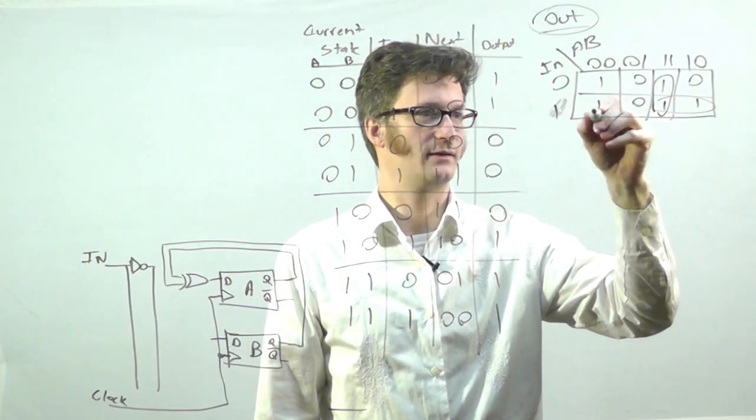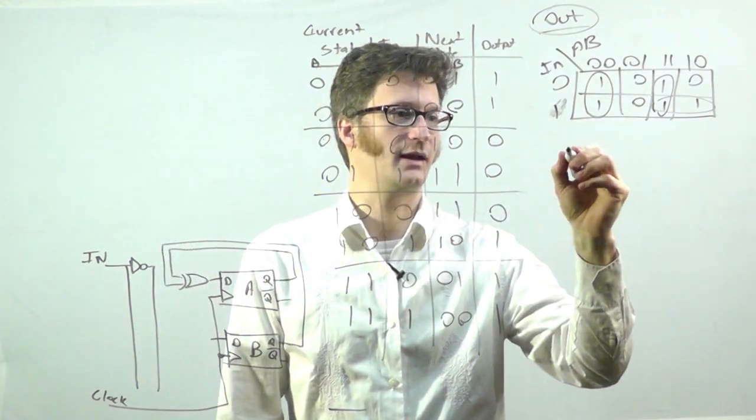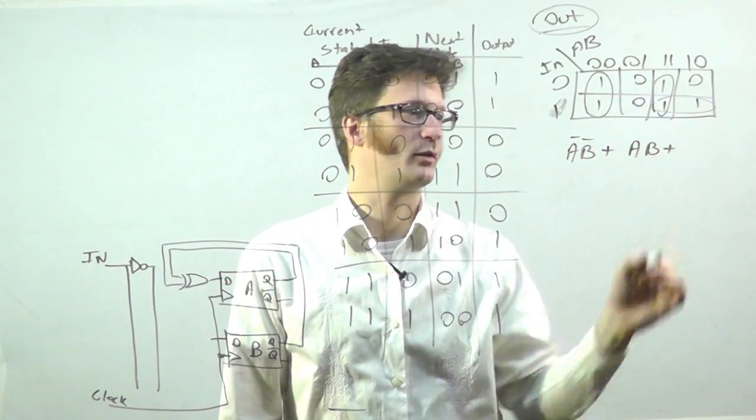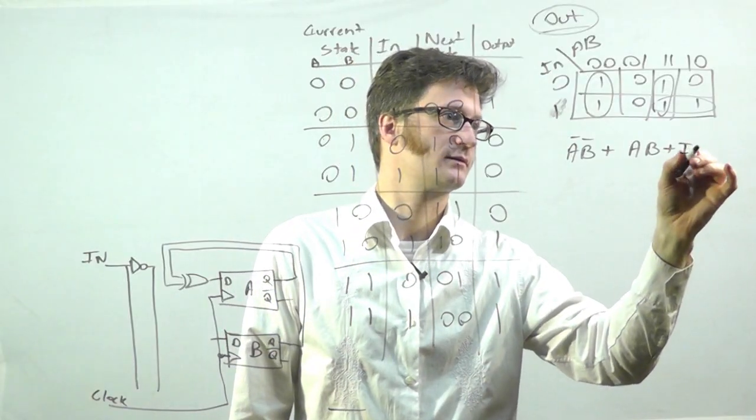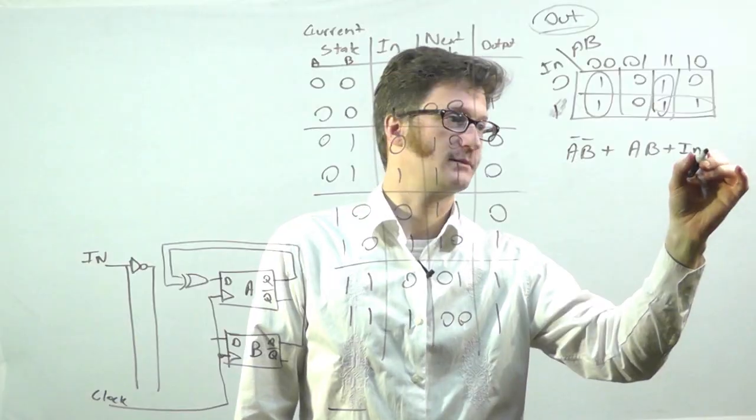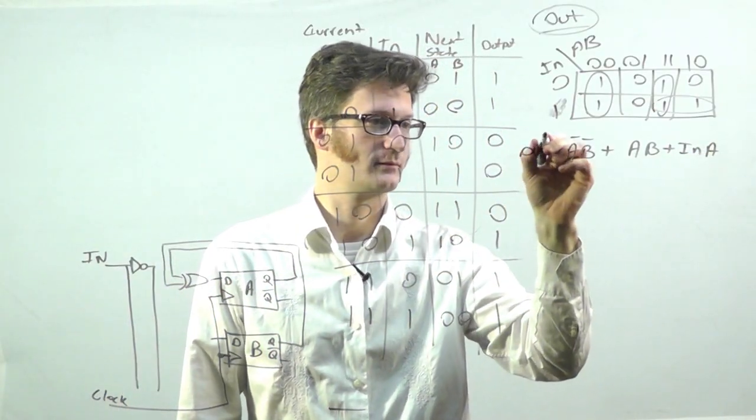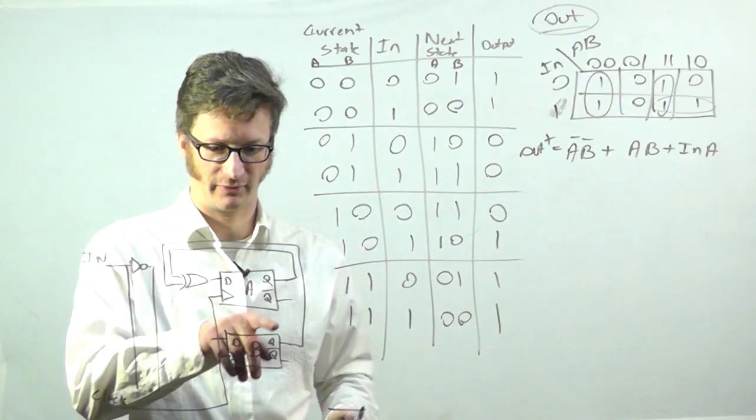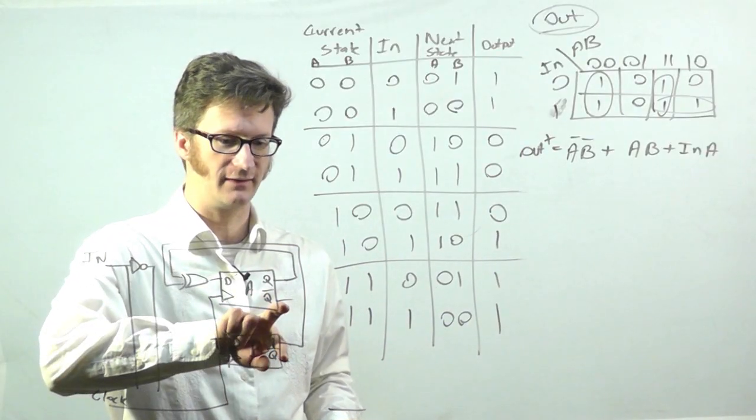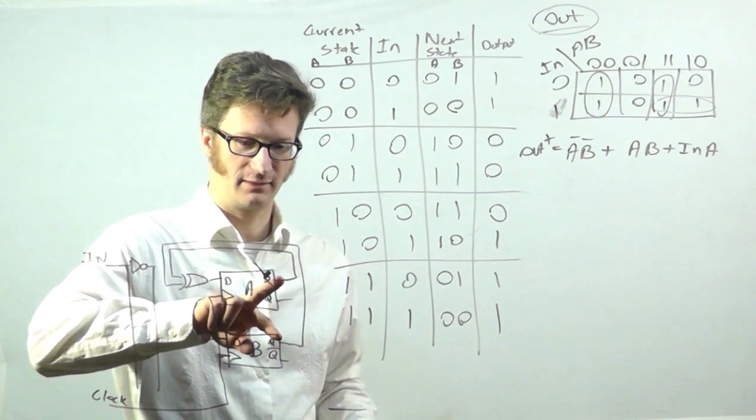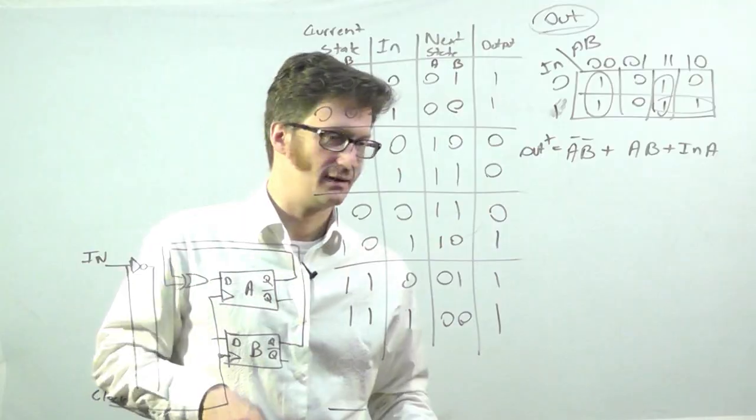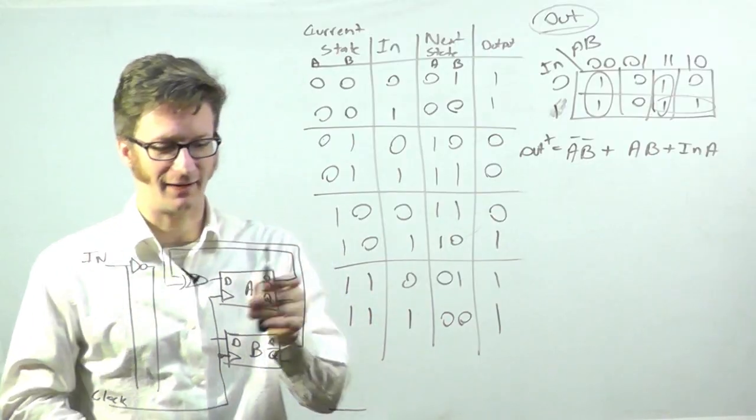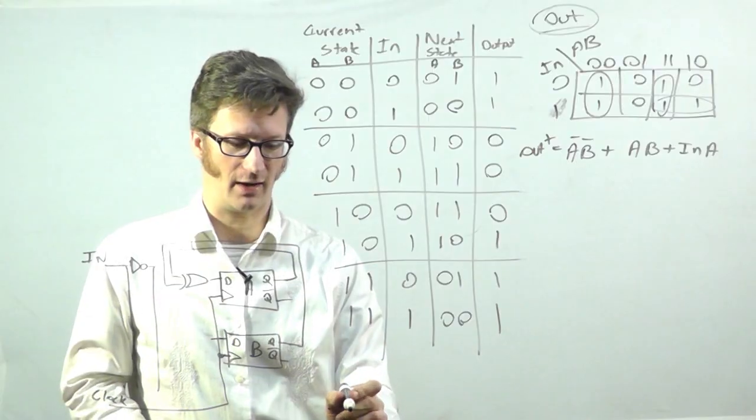And, in this case, looks like we have those three product terms. So, A bar, B bar. Or, AB. Or, IN and A. So, it's that simple. So, we just run A bar, B bar. So, that would be connecting to the Q bar of each of these into an AND gate. AB. The Q goes into an AND gate. And, IN and A. Connect those to an AND gate. And then, tie all three of those AND gates into an OR. And, run that to my output here.